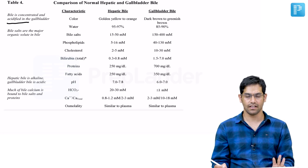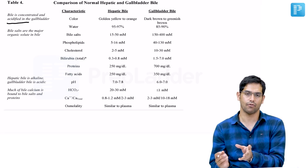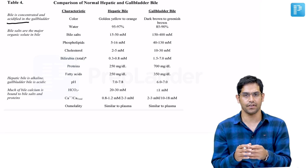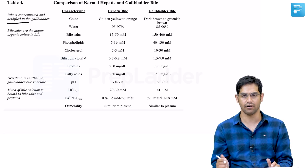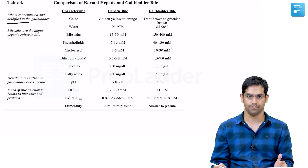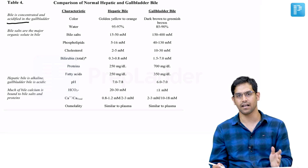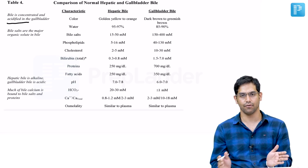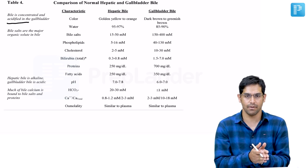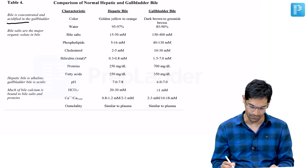Remember three things that are higher in hepatic bile compared to gallbladder bile: because water is being absorbed in the gallbladder, concentration of all solutes increases except for three — chloride, bicarbonate, and pH. Bile in the gallbladder is acidic while hepatic bile is alkaline. So hepatic bile has higher pH, higher chloride, and higher bicarbonate — this is important.